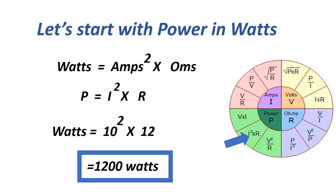The next formula for power: watts equals amps squared times ohms, or P equals I squared times R. Equals 10 squared — or 100 — times 12. Our answer is 1200 watts.